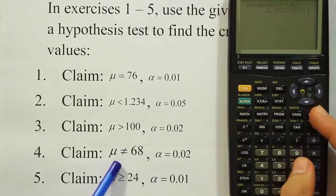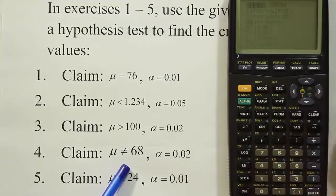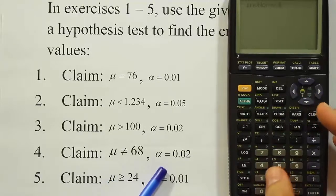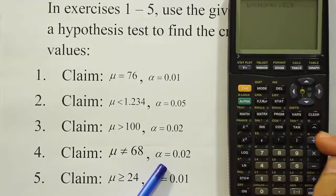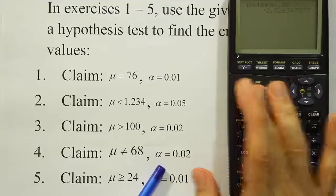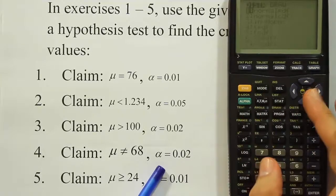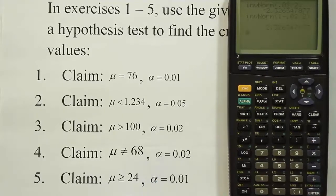This problem has a not-equal-to symbol, so it's a two-tailed test. Using second → vars → option 3, we enter 0.02 divided by two to get the negative critical value: minus 2.326. To get the positive value, we use inverse norm with one minus 0.02 divided by two, giving positive 2.326. Alternatively, you can start with the negative result and simply drop the negative sign for the positive answer.